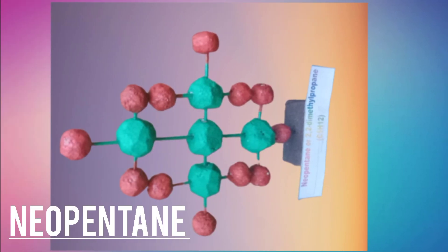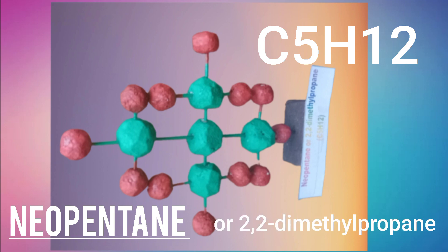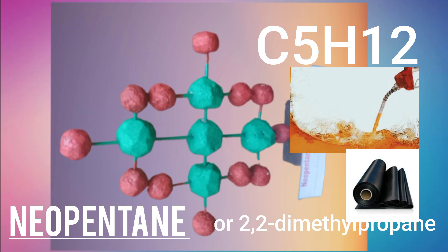Neopentane is a branched alkane also having five carbon atoms and 12 hydrogen atoms, or C5H12. It is also known as 2,2-dimethylpropane because the parent chain — the longest continuous chain of carbon atoms — is three, making it a propane. '2,2-dimethyl' because the prefix 'di' means two, so it has two methyl CH3 groups branching on the second carbon of the parent chain. Neopentane is used as a gasoline blending agent and for making butyl rubber.